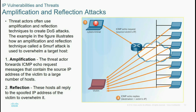Threat actors often use amplification and reflection techniques to create a denial of service against a target. For example, a Smurf attack is used to overwhelm the target host. In amplification, the threat actor forwards ICMP echo request messages containing the source IP address of the victim to a large number of hosts. In reflection, those hosts reply to the victim's IP address, overwhelming it.